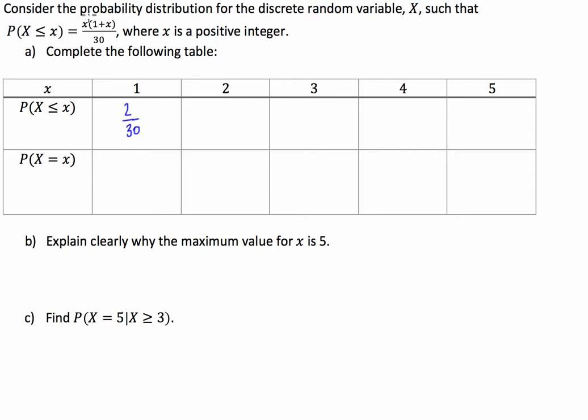Put in 2, we've got 2 times 3 over 30 is going to be 6 over 30. We've got 3, so we're going to have 3 times 4, which is 12 over 30.